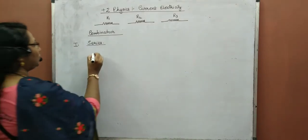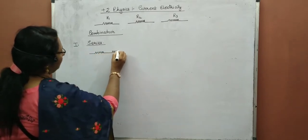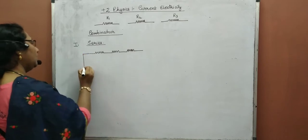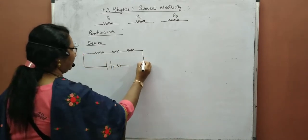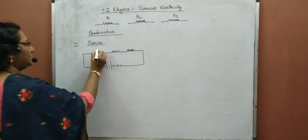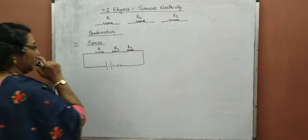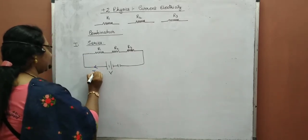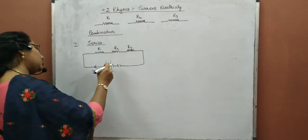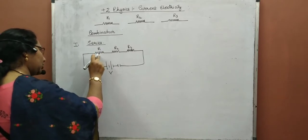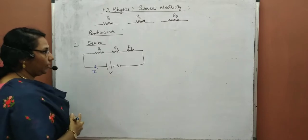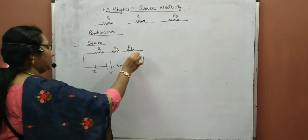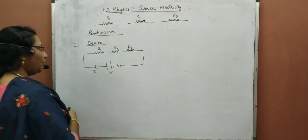In a series combination, the three resistors are connected across a single wire, and the whole arrangement is connected to a battery and a switch. This is R1, this is R2, and this is R3. The battery gives a potential difference, and as a result current I begins to flow through the circuit. Whatever amount of current flows through this wire will go through the first resistor, then the second, then the third, completing the circuit.